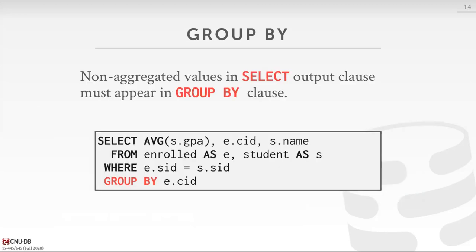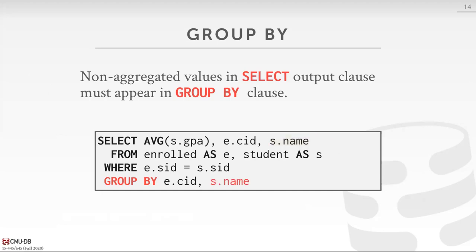If you have a GROUP BY clause but then have columns in the SELECT that are not specified in the GROUP BY — like trying to get the student name without it being in the GROUP BY — in some systems you'll get a weird or random answer; in others that follow the SQL standard more closely, they'll say you can't do this. The only valid approach is to also put that column in the GROUP BY. The rule is: you can't have anything in the SELECT output unless it's also included in the GROUP BY clause.